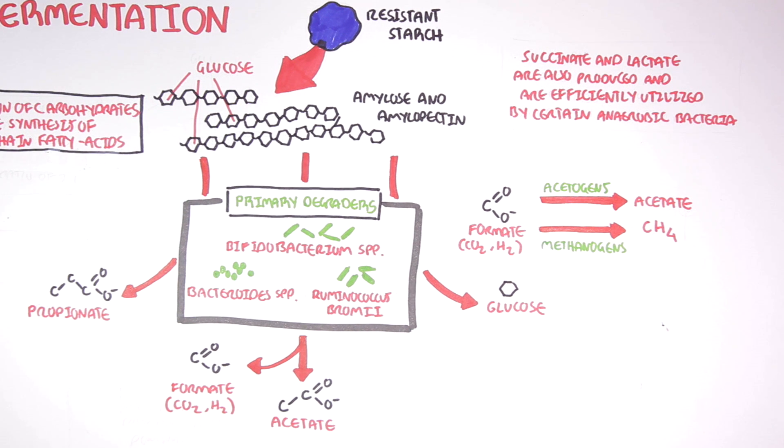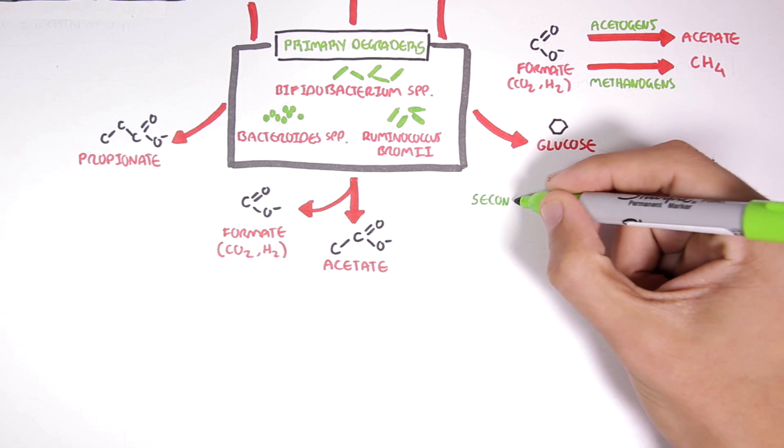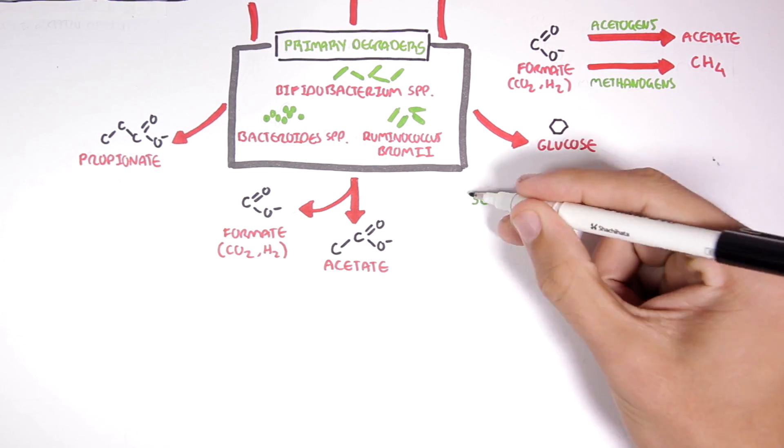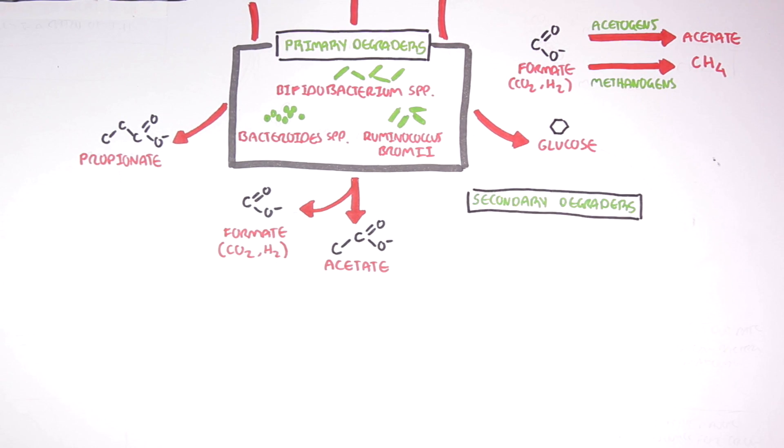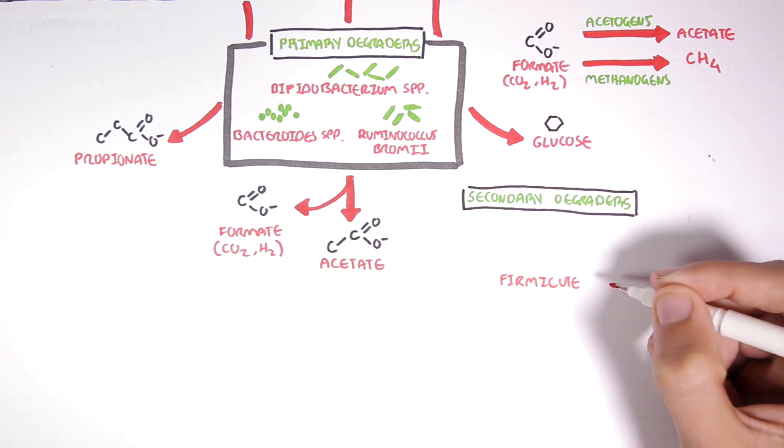Now back to the degraders, there are another set of bacteria called the secondary degraders that also contribute to the fermentation of resistant starch. However, the secondary degraders are considered to have no enzymes that initiate the cleavage of glucose from the glucose polymers that make up resistant starch. And so,